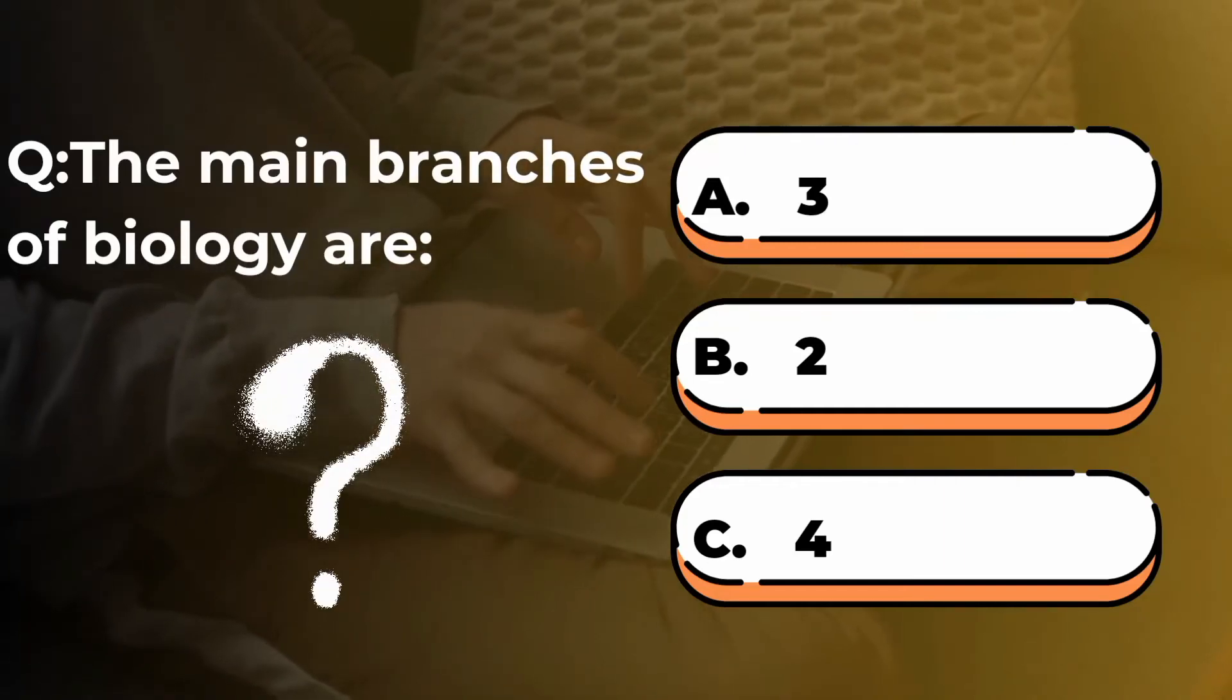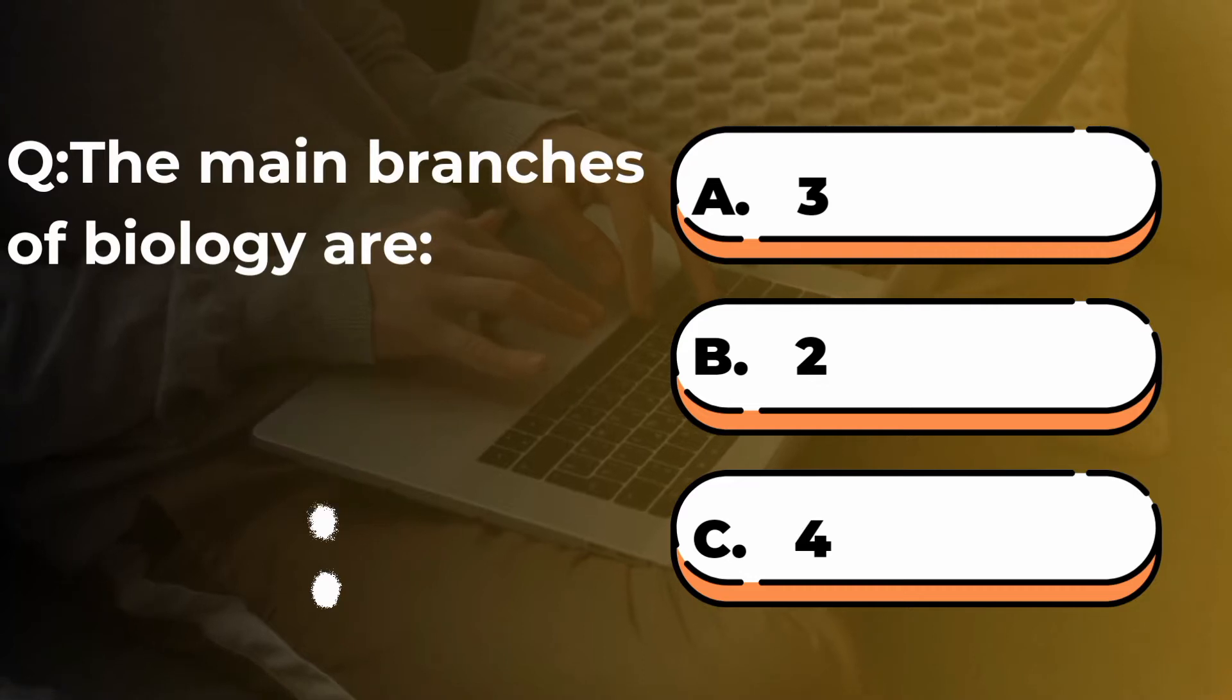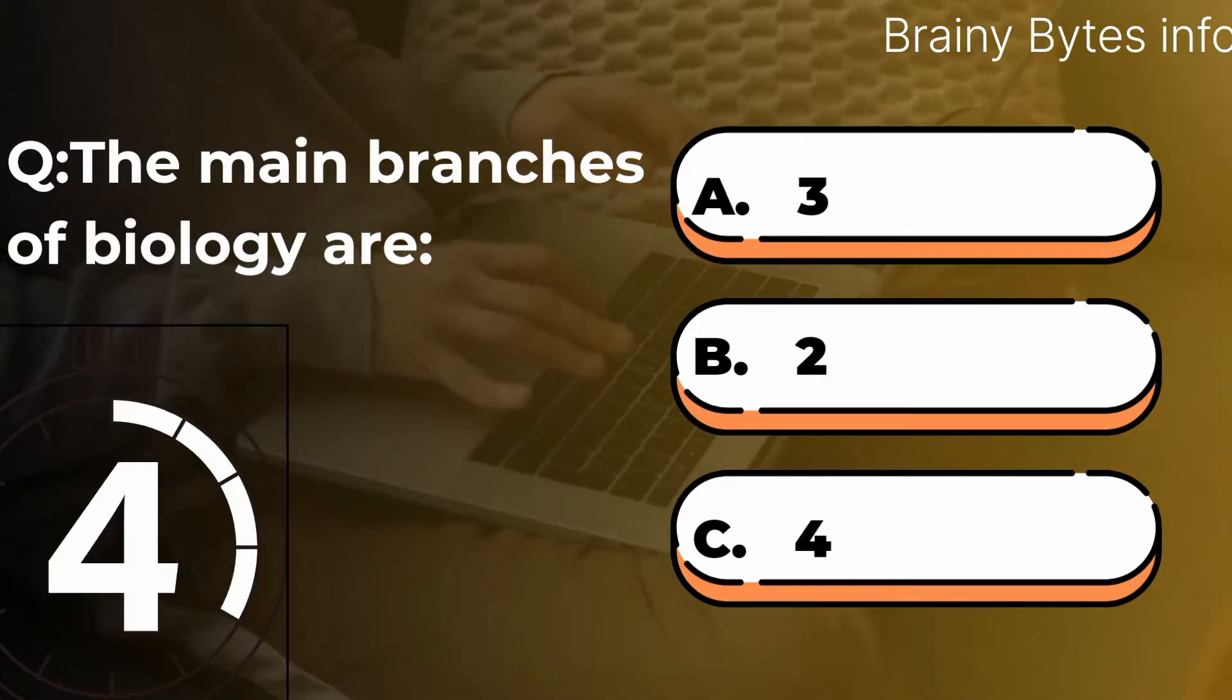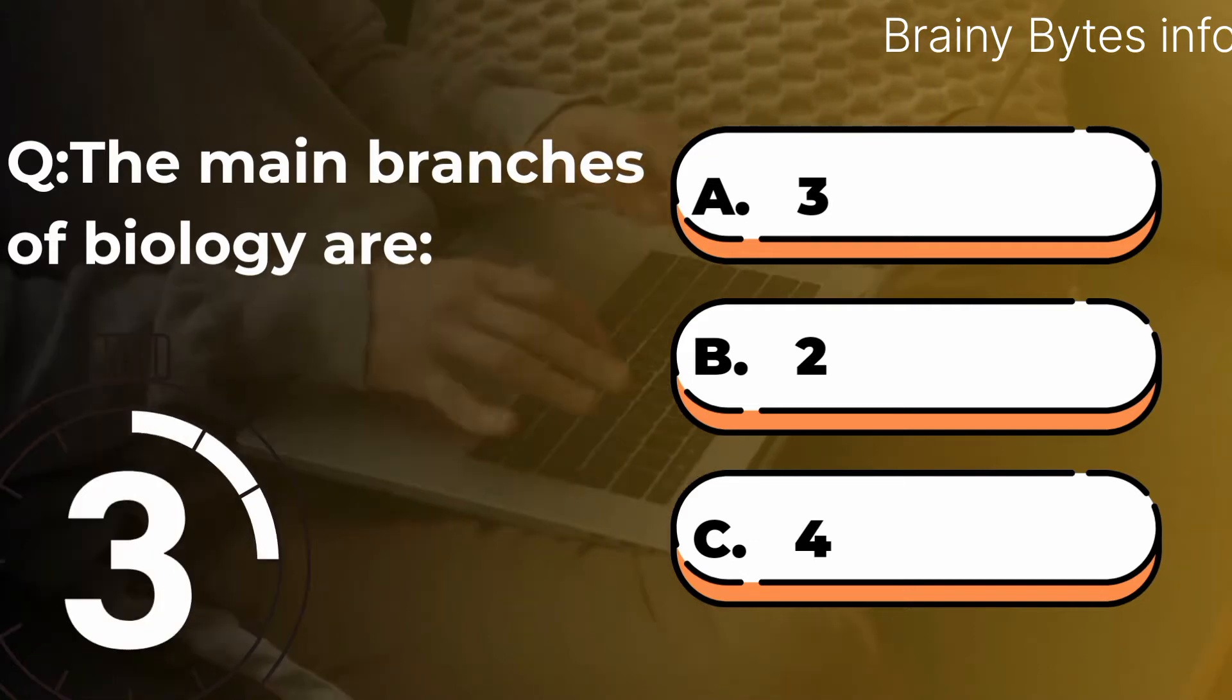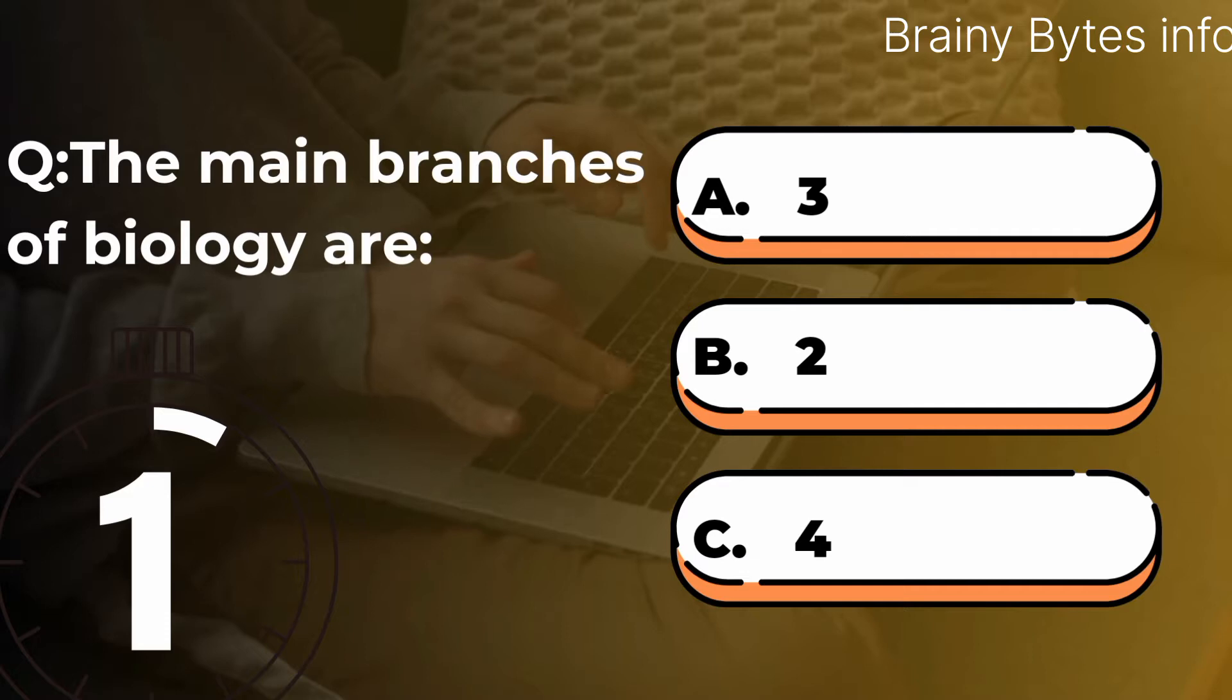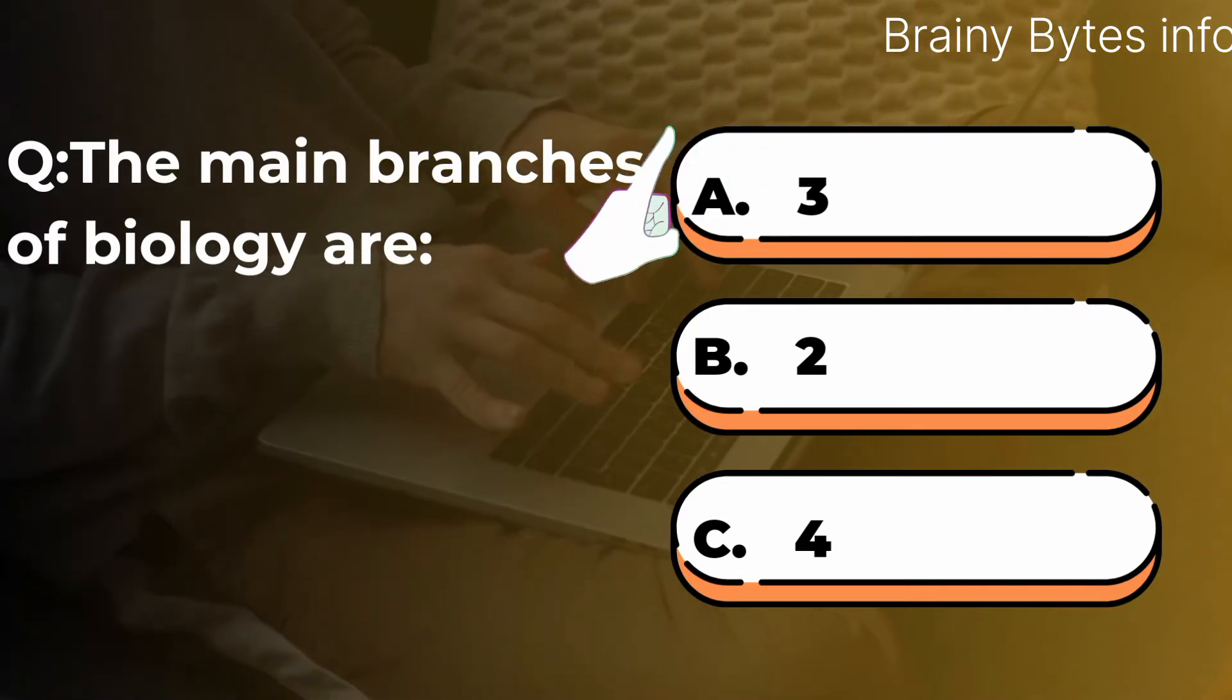The main branches of biology are: A. 3, B. 2, C. 4. Answer: Option A, three branches.